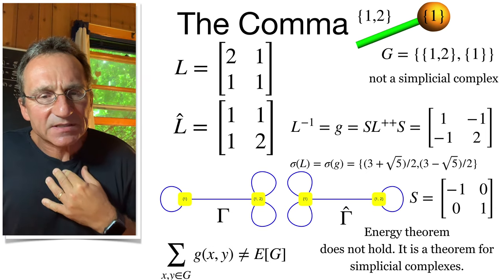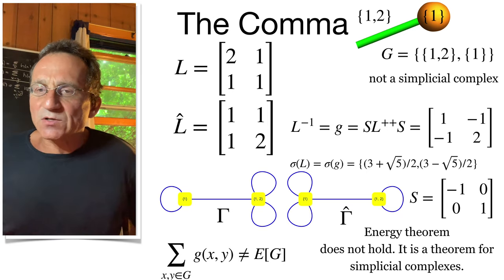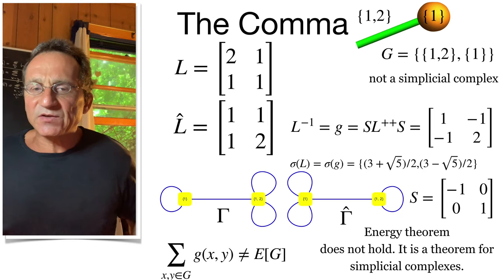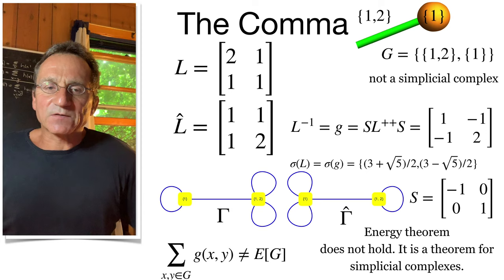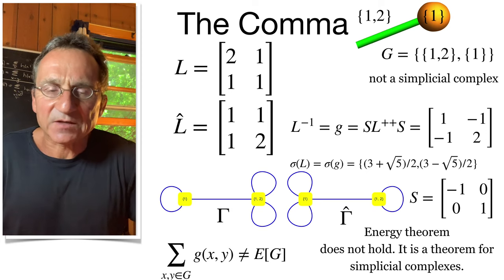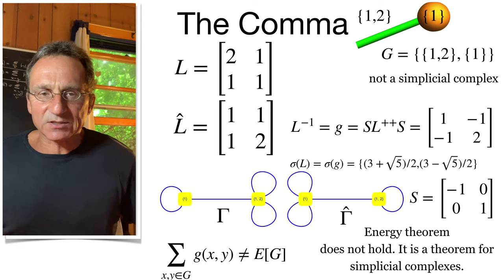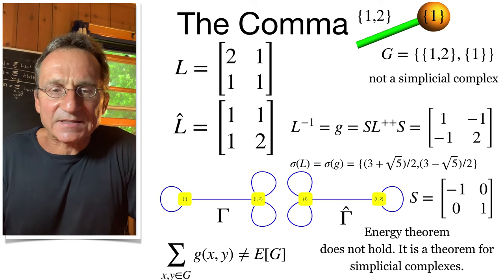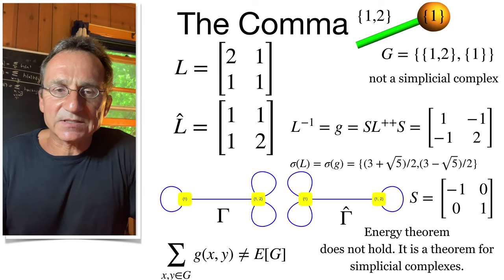And we see, in this case, the graphs are isomorphic. This example is also illustrative because the energy theorem, a result which says that the sum of the inverse entries of the green functions of L is the total energy, which is here the total number of sets. It does not hold if one does not assume to have a simplicial complex.